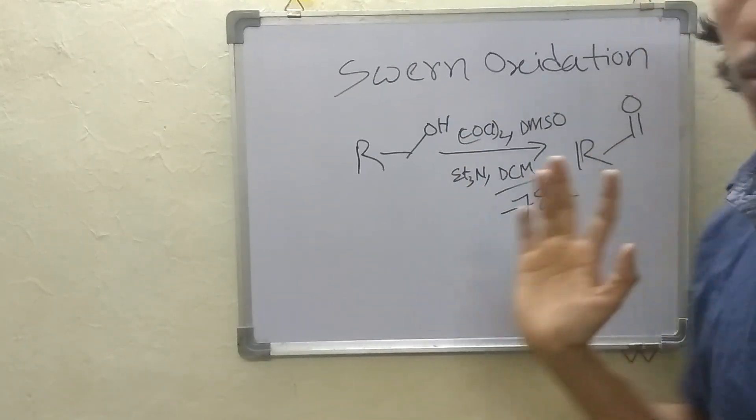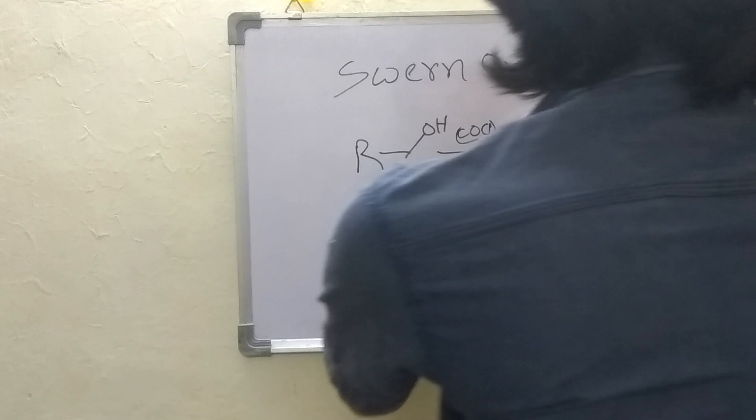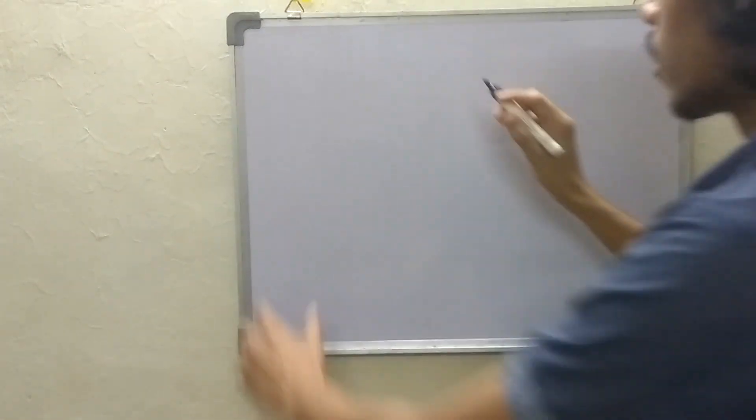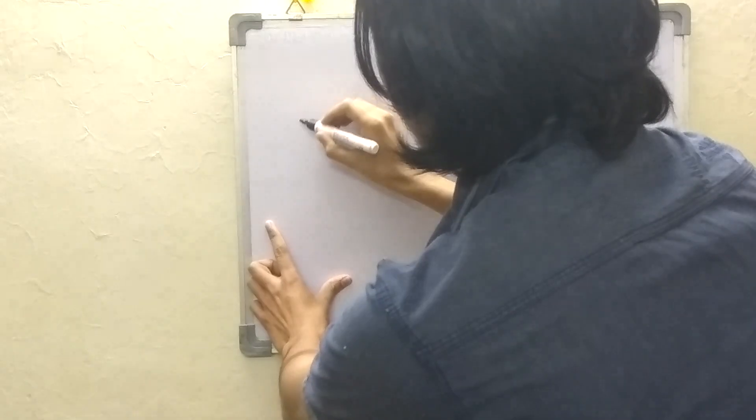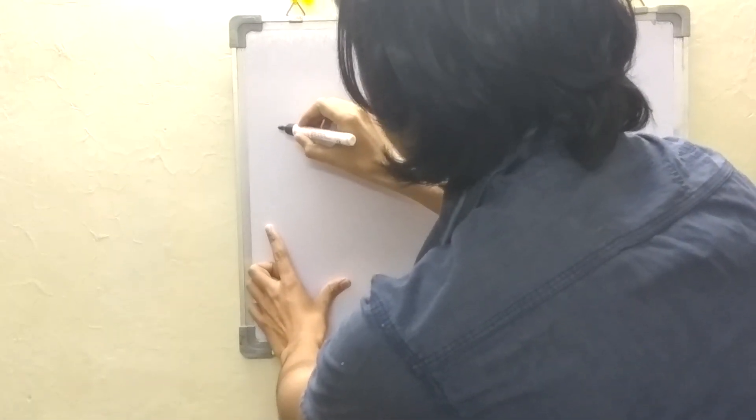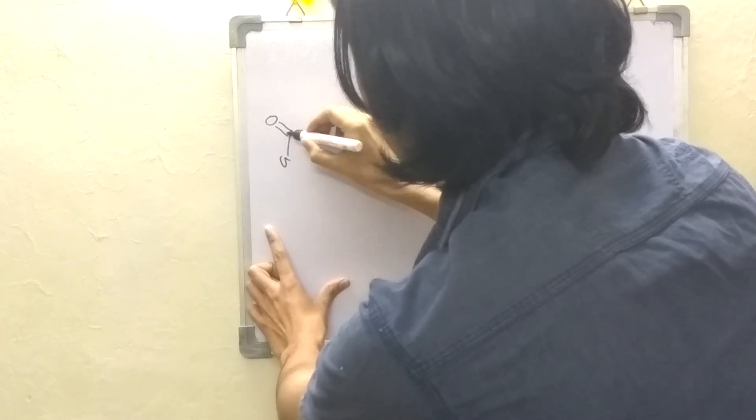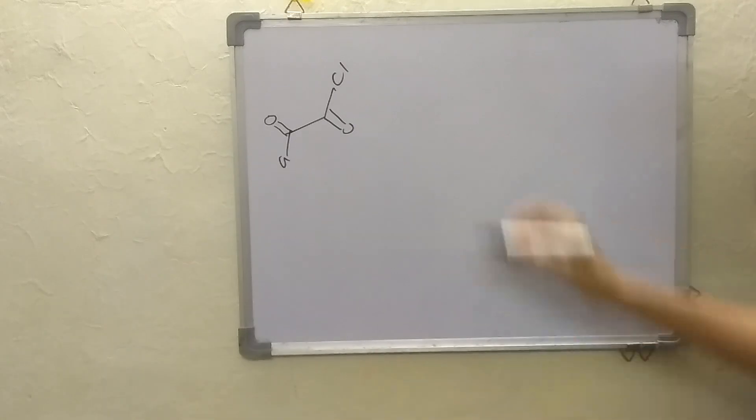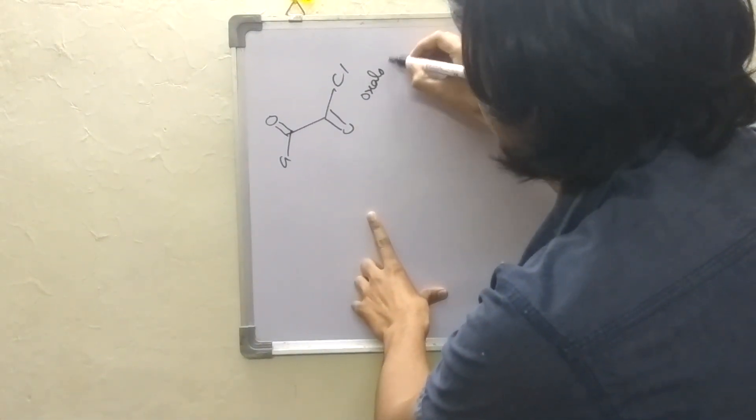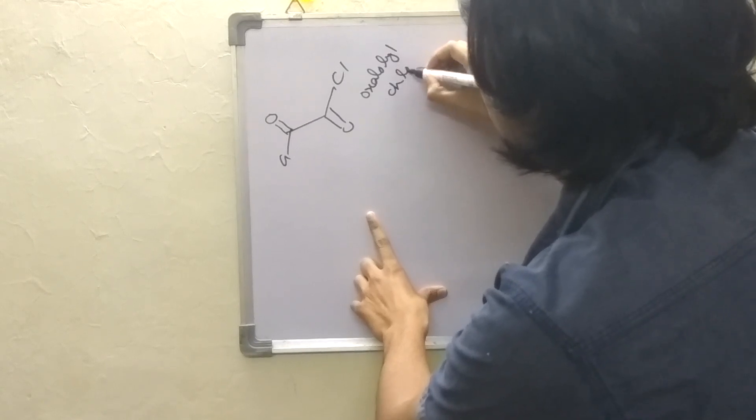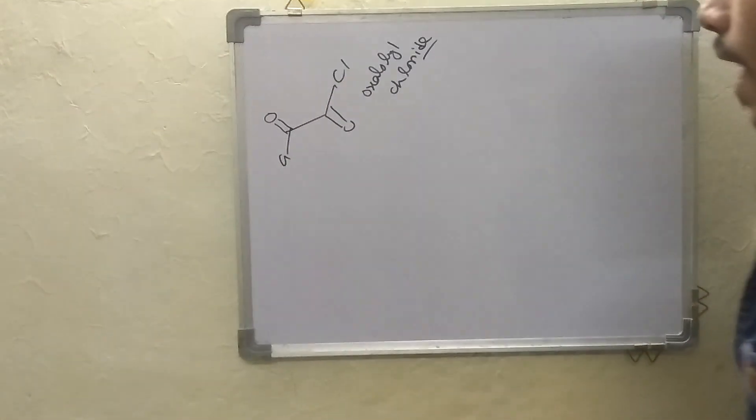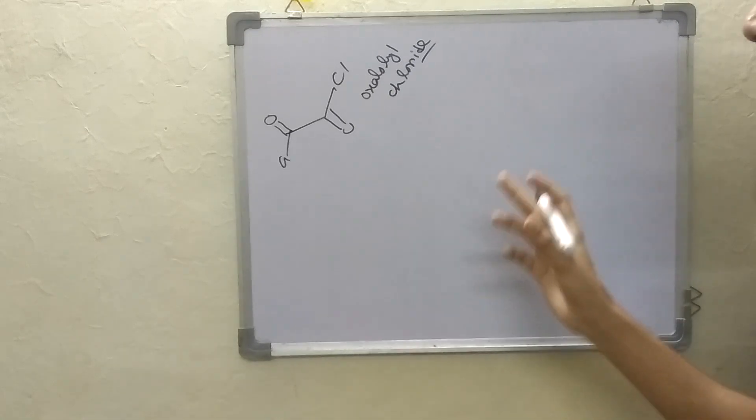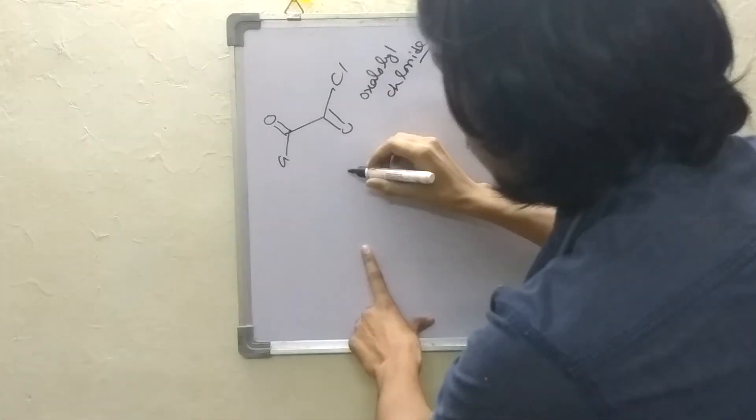Now stepwise we will look into the mechanism. As we have told first there is oxalyl chloride - this is the structure of oxalyl chloride. And we have DMSO in the solution with DCM.